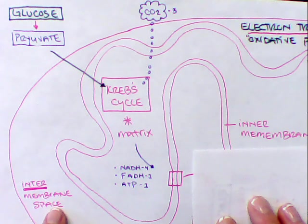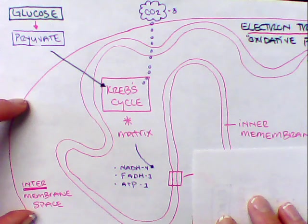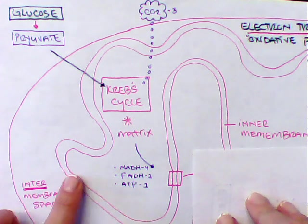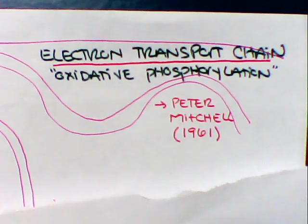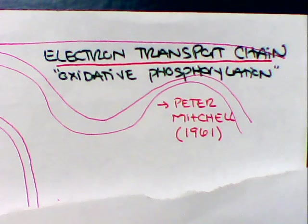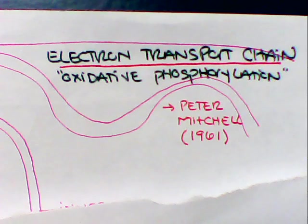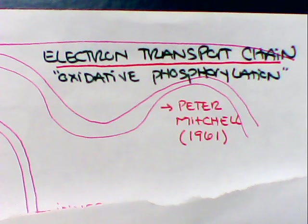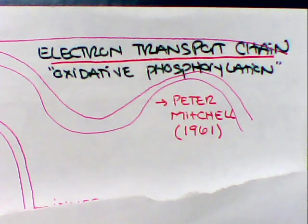Now between this membrane here, this is known as the intermembrane, and the outside wall of the actual mitochondria, and this is where a lot of the action is going to be taking place. Go ahead and take a moment and write down that the electron transport chain, which is also known as the oxidative phosphorylation, was actually discovered by Peter Mitchell in 1961, and this is the process that we're going to discuss right now.